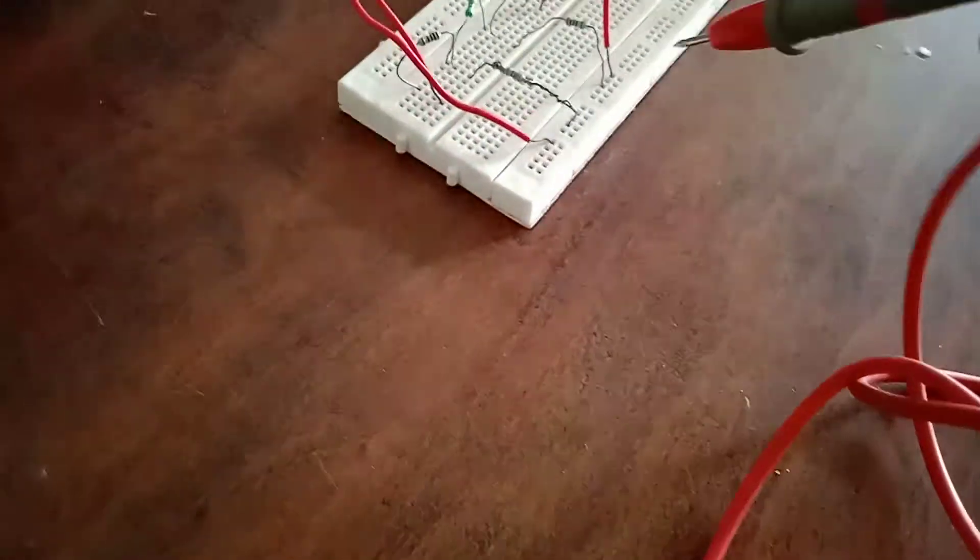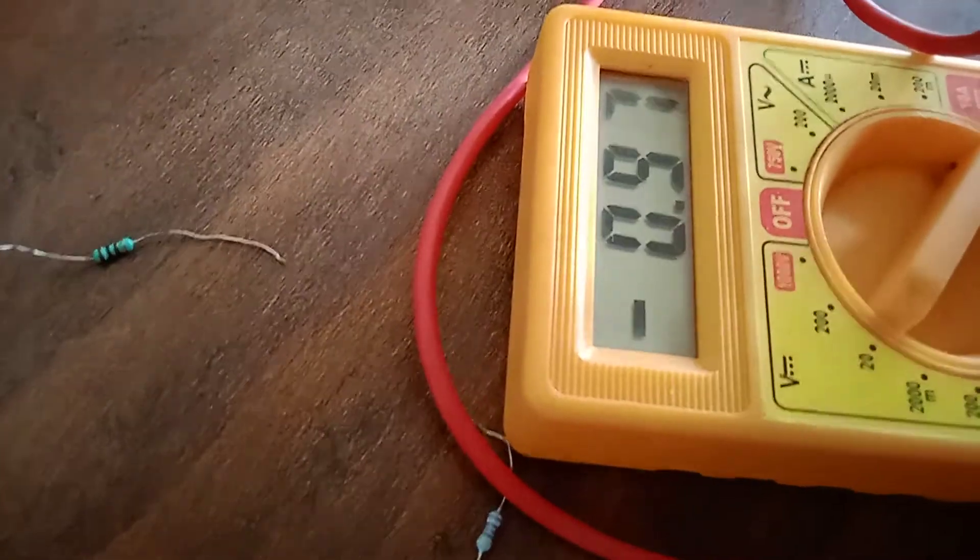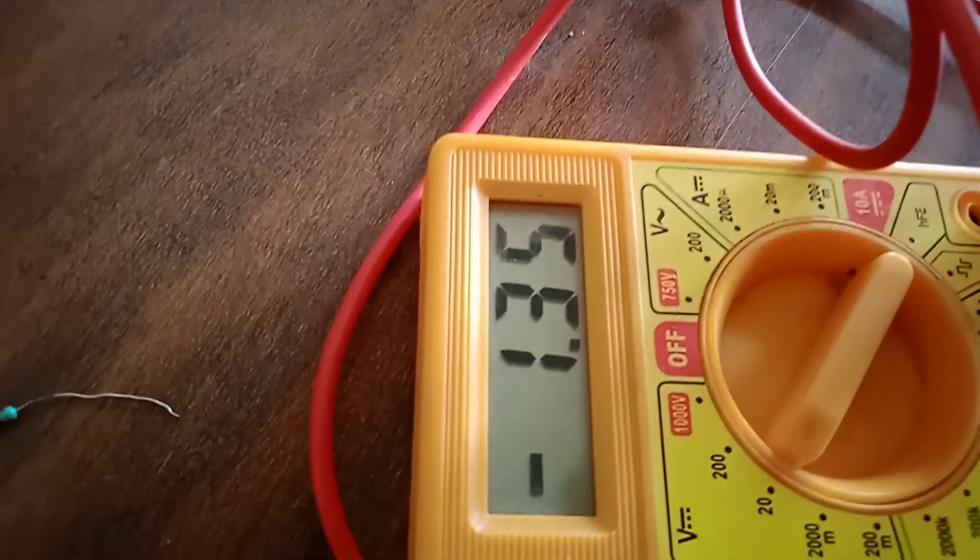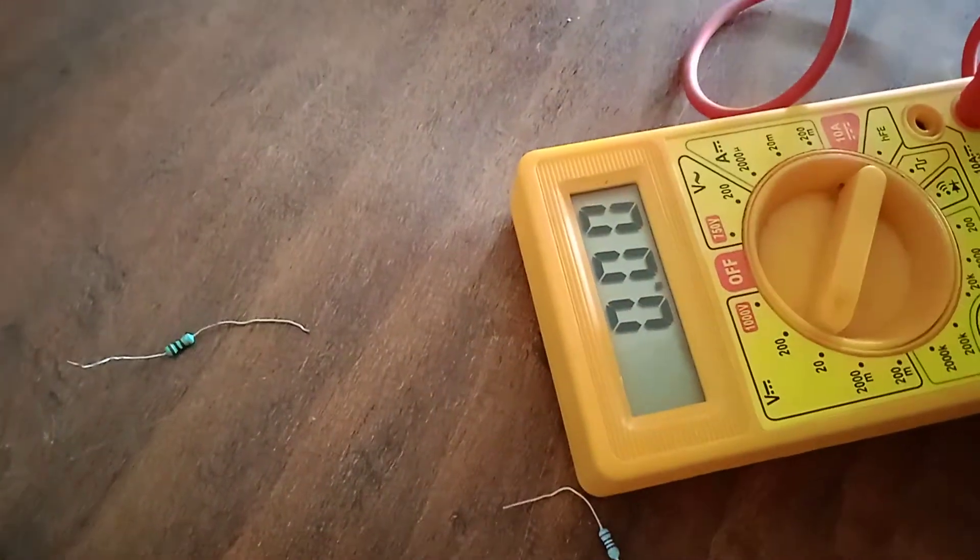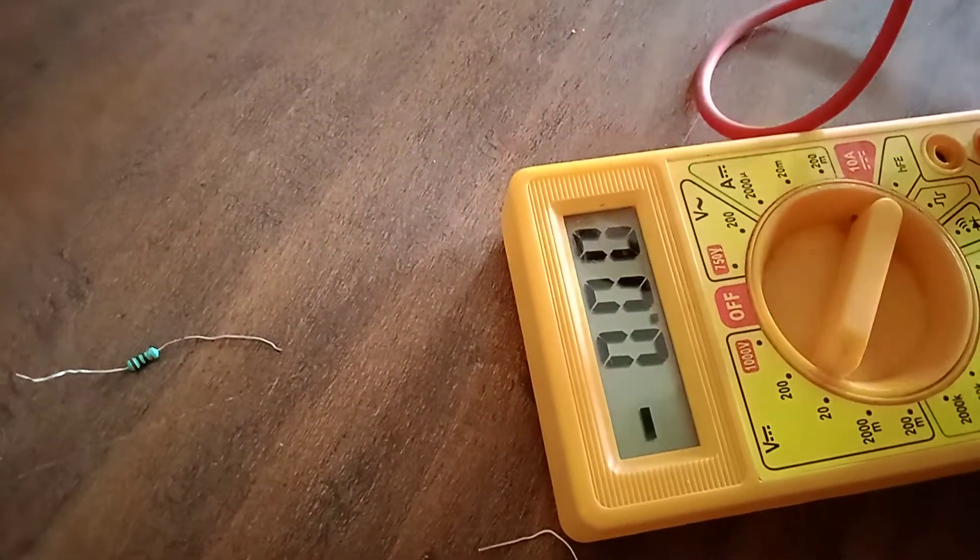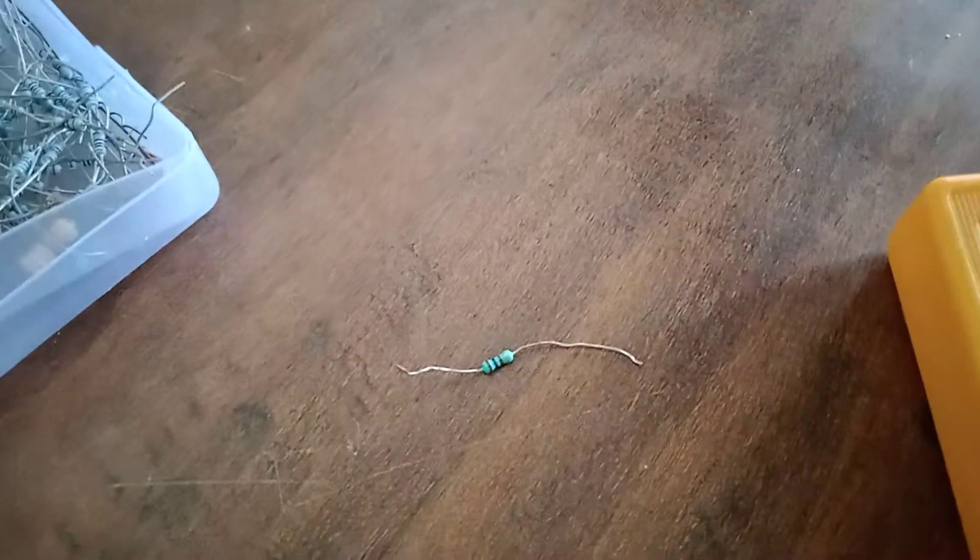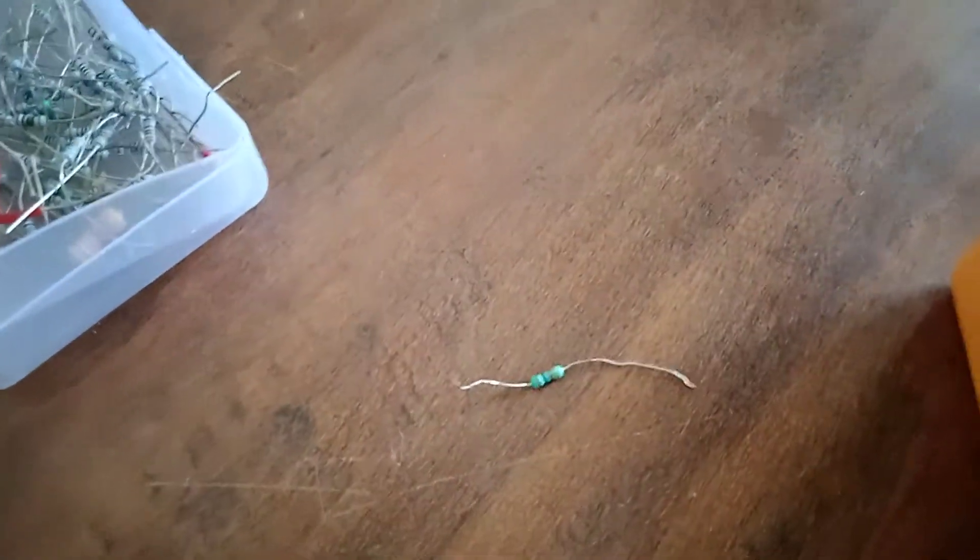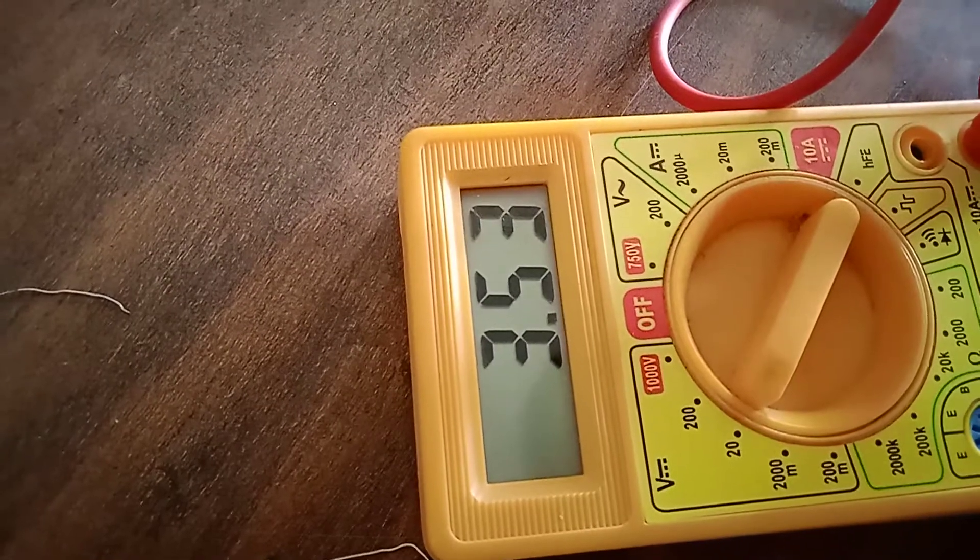Next VB. Now the first value is negative because I have changed the polarity. Now the value is positive. Now the value is positive and is 3.5.